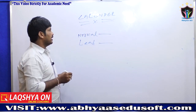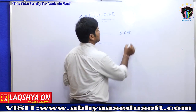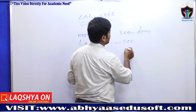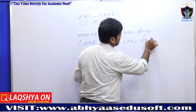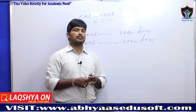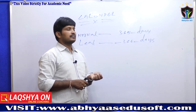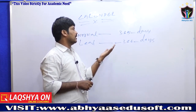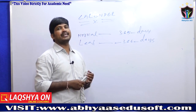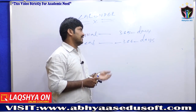A normal year consists of 365 days and a leap year consists of 366 days. The reason a leap year has 366 days is that in a normal year, February has only 28 days, whereas in a leap year, February has 29 days.